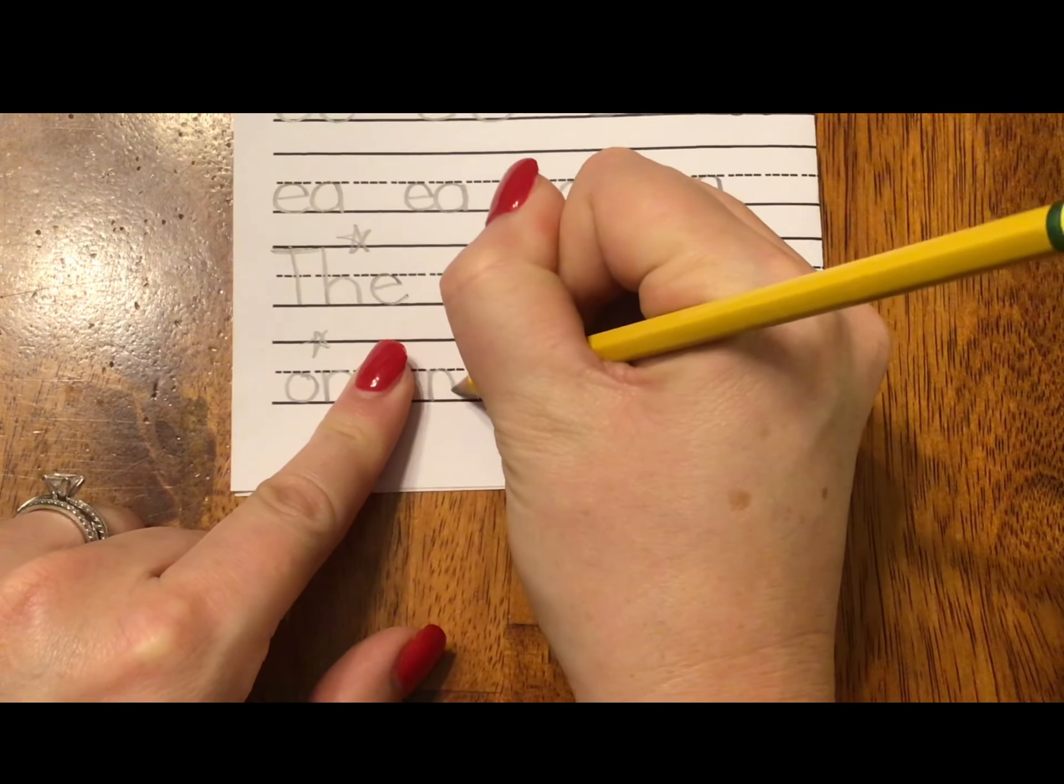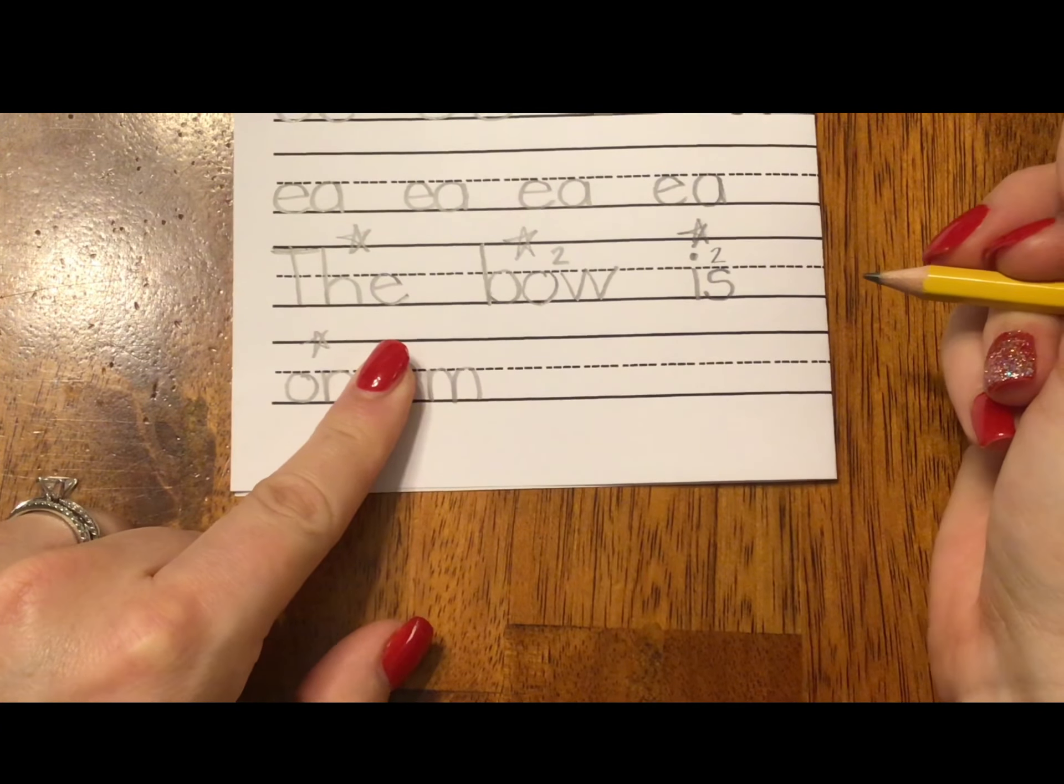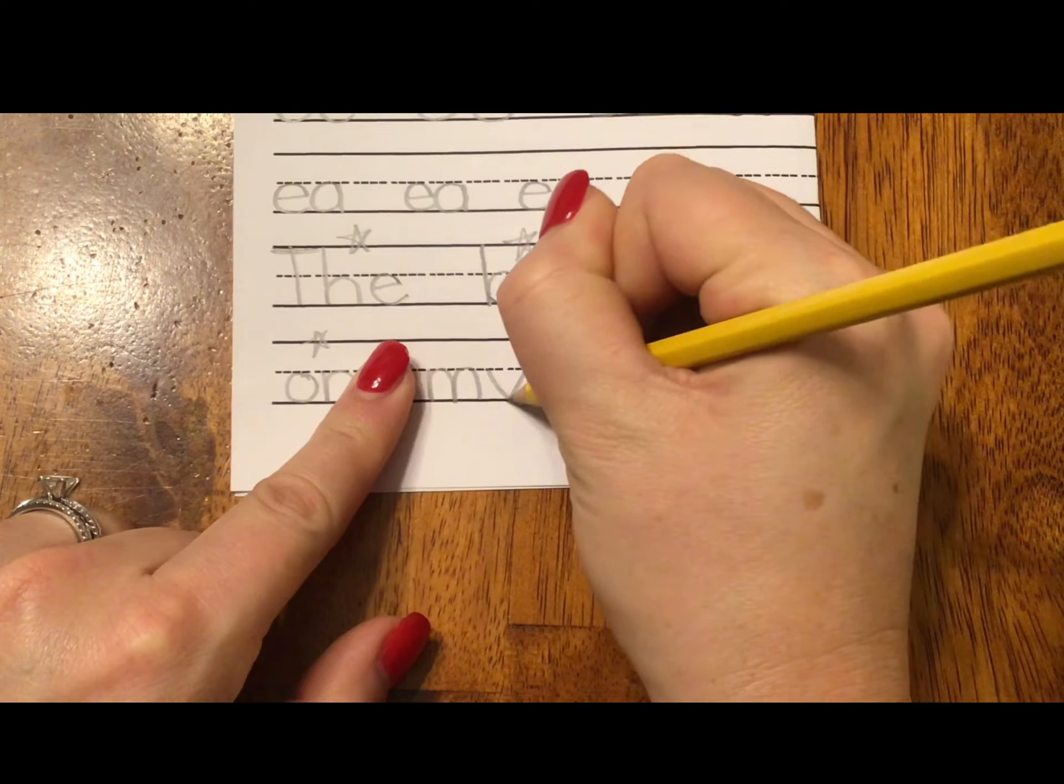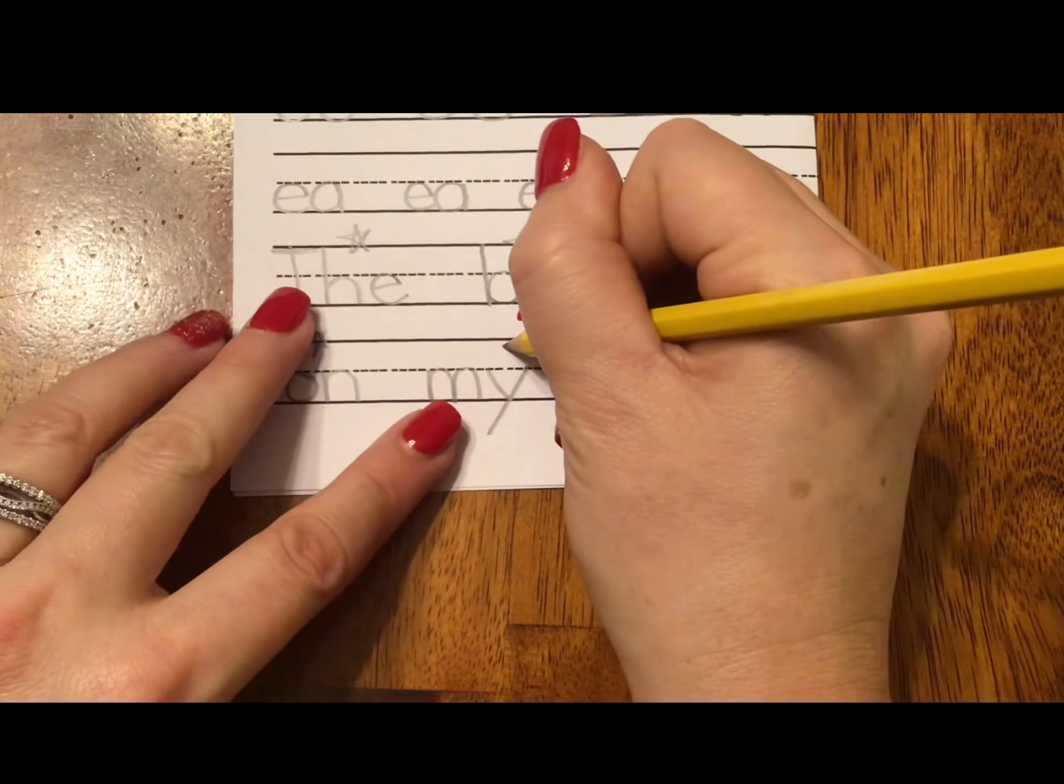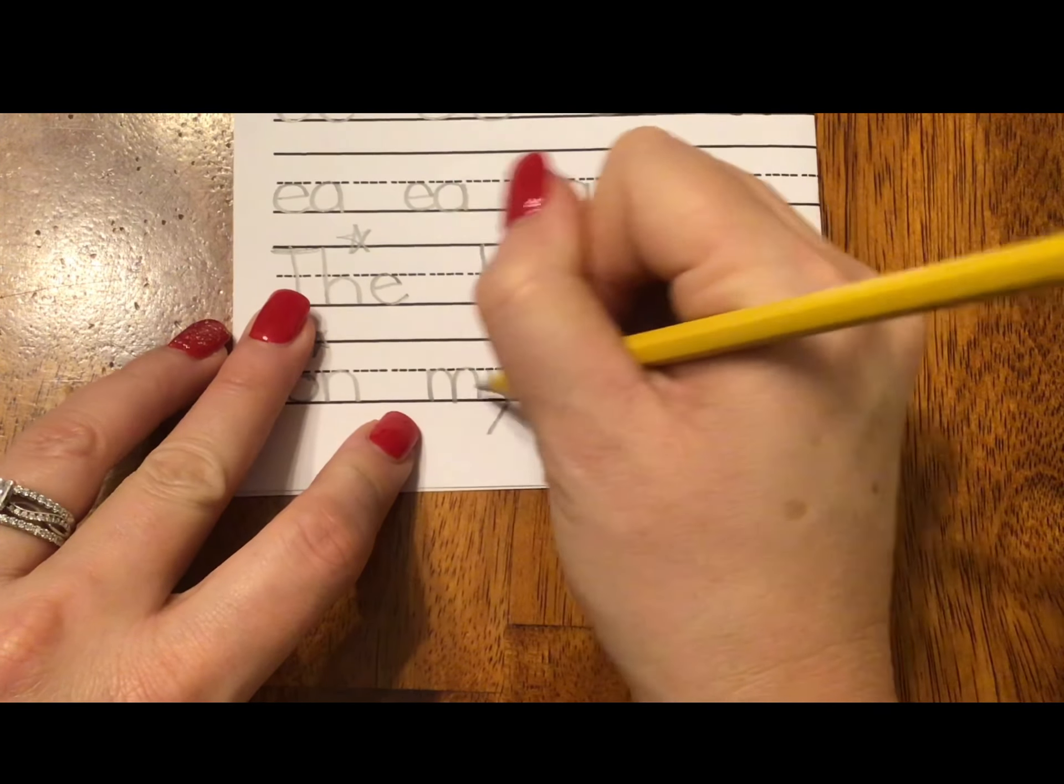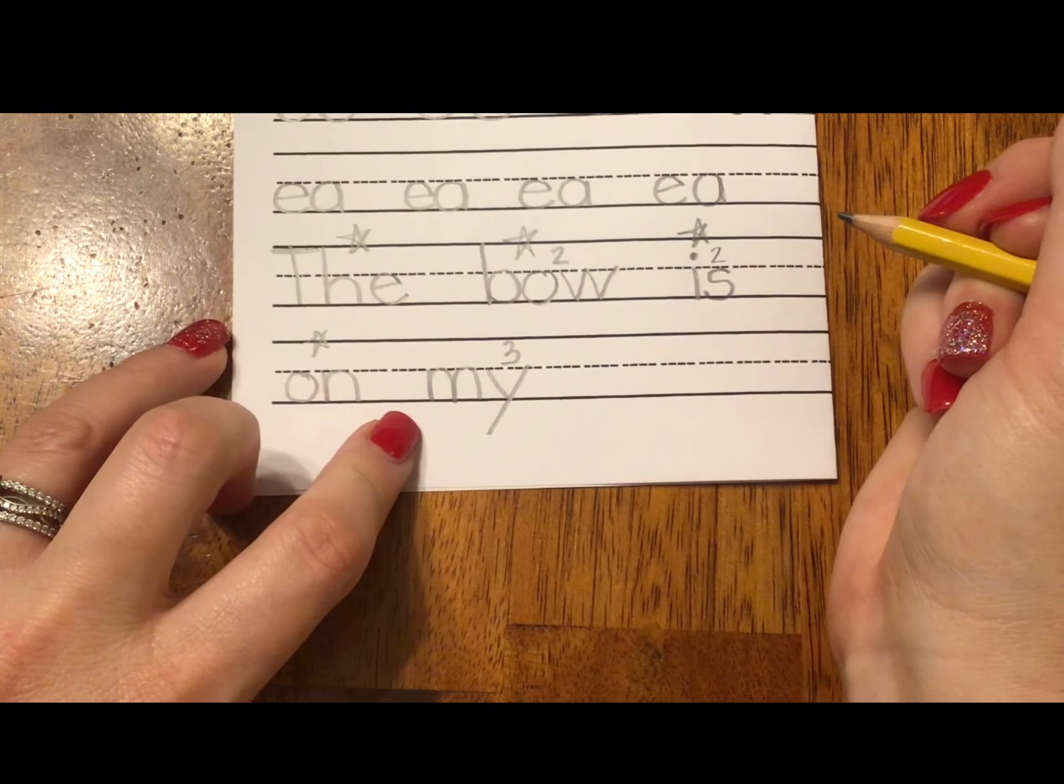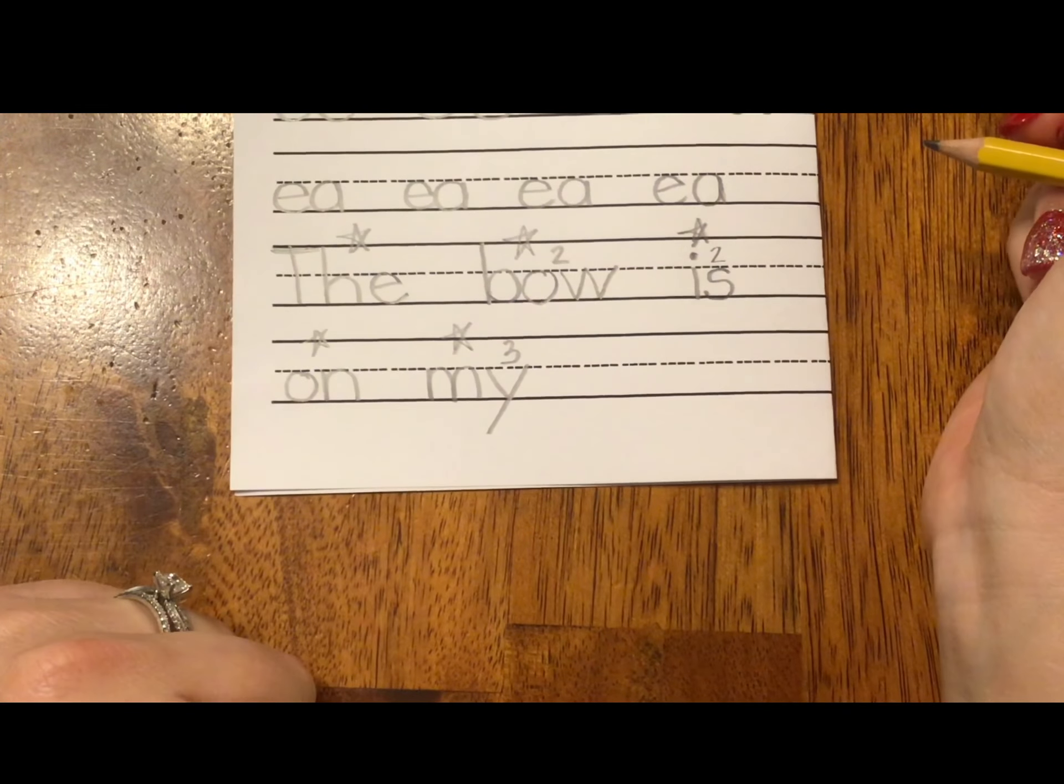The bow is on my. Mmm. And I said use Y, I, I, E. The Y, I, I, E is a Y. And it is Y, I, I. The third sound. Mmm. I. It's the third sound of Y. On. The bow is on my. Give yourself a star or a smiley if you wrote the word my, M, Y.